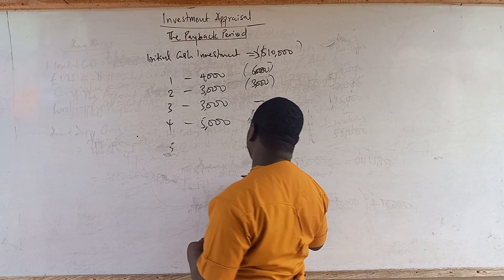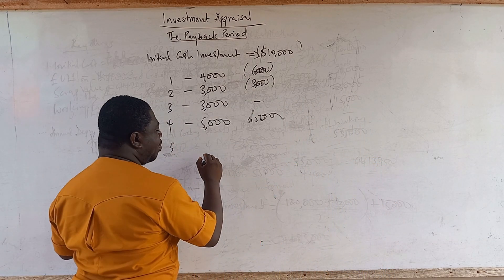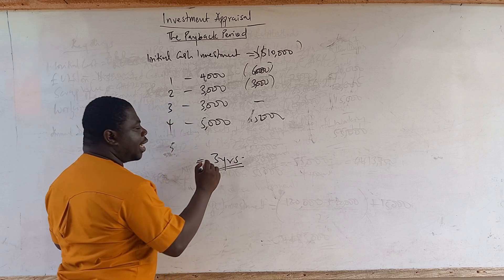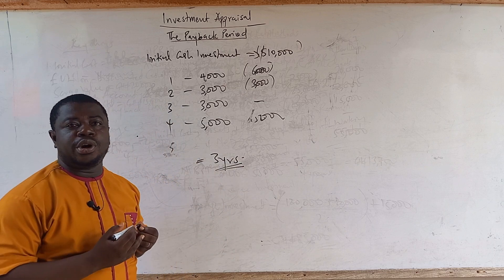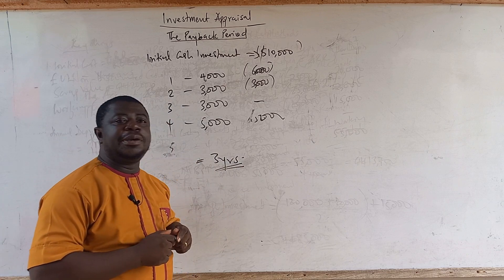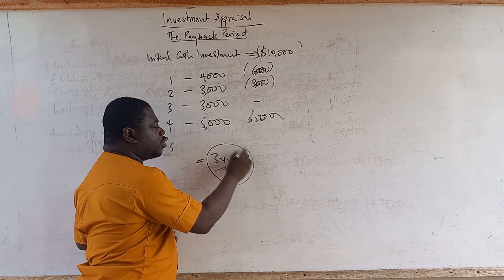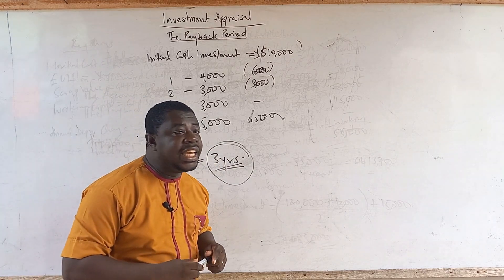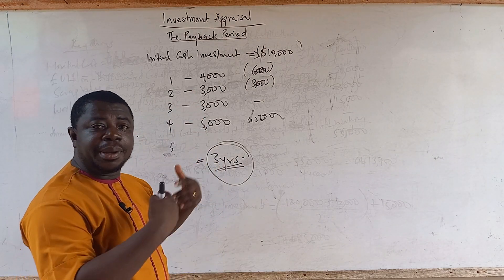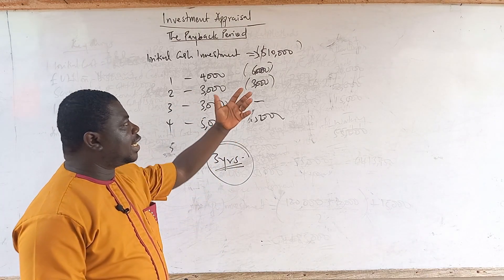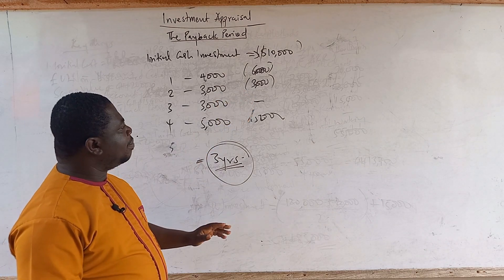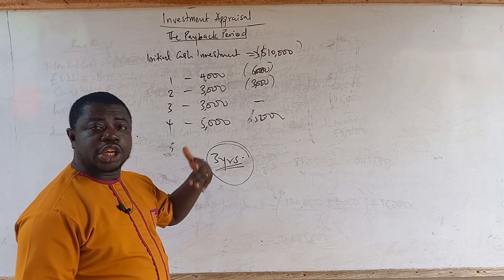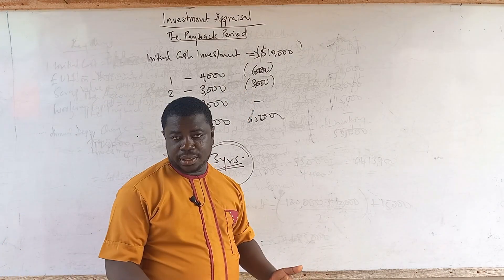In this case, we will say that the payback period is three years. The payback period is not given in percentages; the answer is in the number of years it takes for the project to pay back the initial investment. Usually, the shorter the payback period, the better.